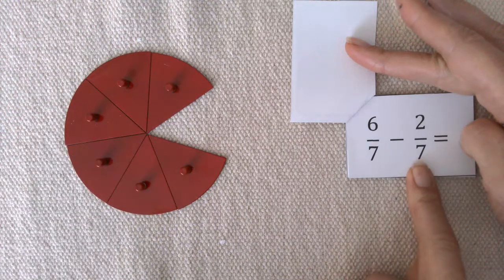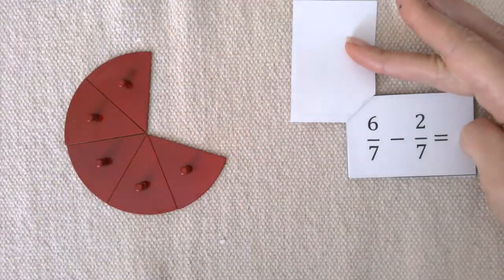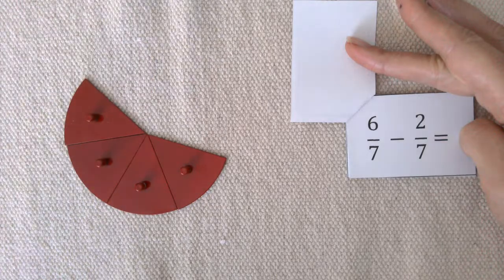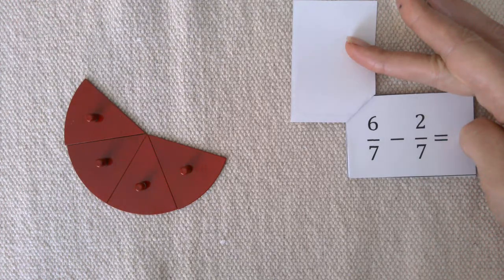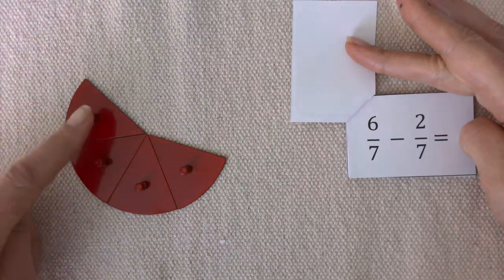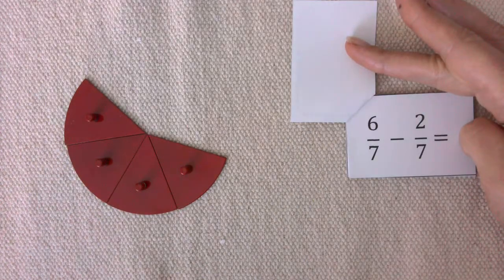We're taking away 2 of them. 1, 2. And what are we left with? 1, 2, 3, 4, 7ths.